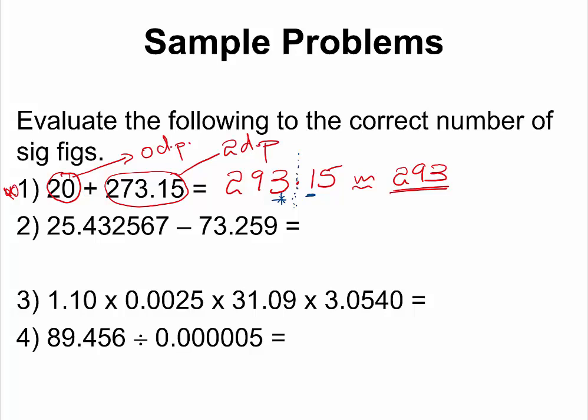Let us move on to question number two. Here we are trying to subtract one number from another. If you enter 25.432567 minus 73.259 into your calculator, your calculator should give you negative 47.826433. But remember, we are treating all of these numbers as measurements, and for a subtraction operation, you are limited by the measurement with the least number of decimal places.